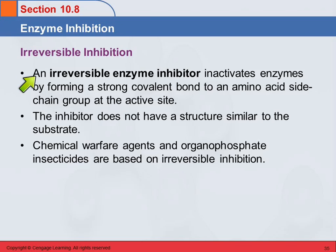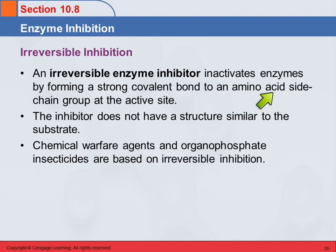With irreversible inhibition, some sort of molecule forms a covalent bond — not just intermolecular forces, but actually bonding to one of the amino acid side chains at the active site. So you've got your active site and now you've got this thing that's stuck there. It's like jamming a match into the keyhole of a lock — you can't get the key in anymore because there's something stuck in there.